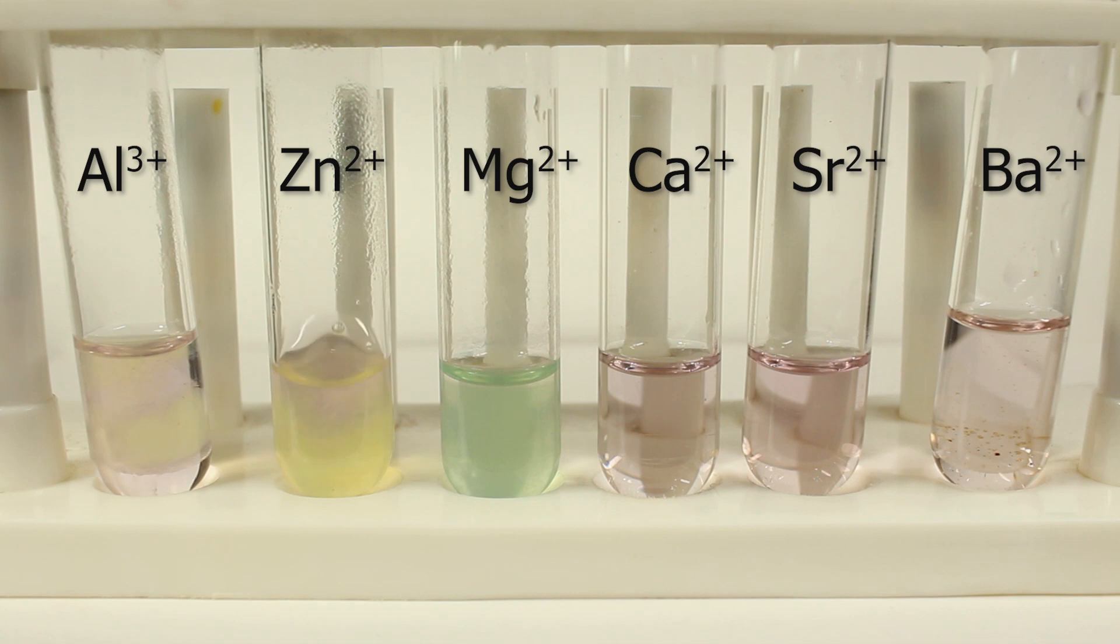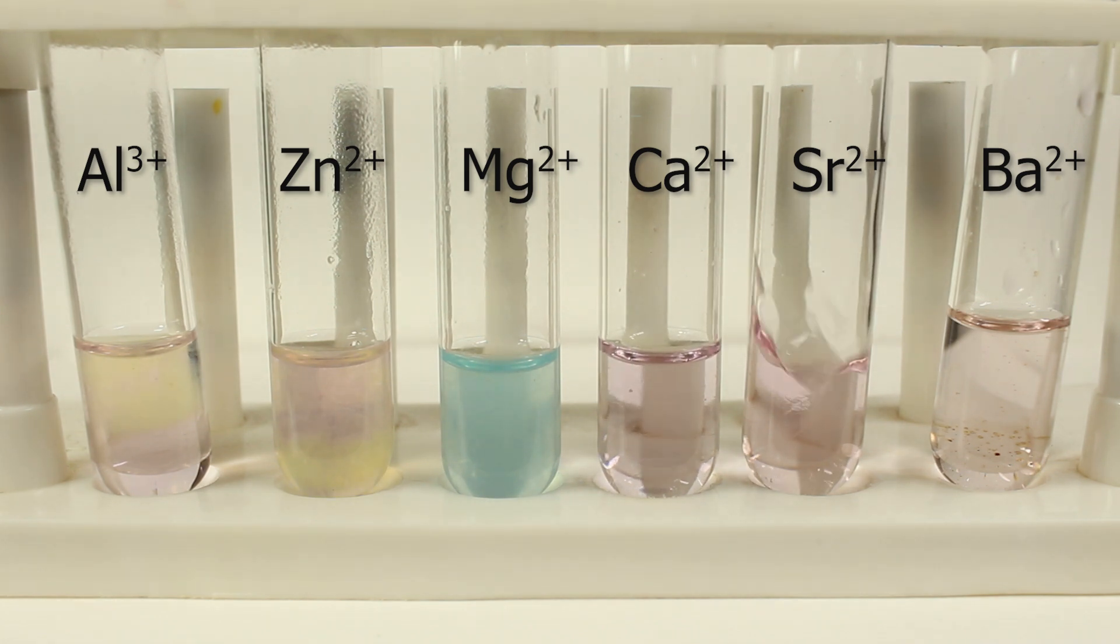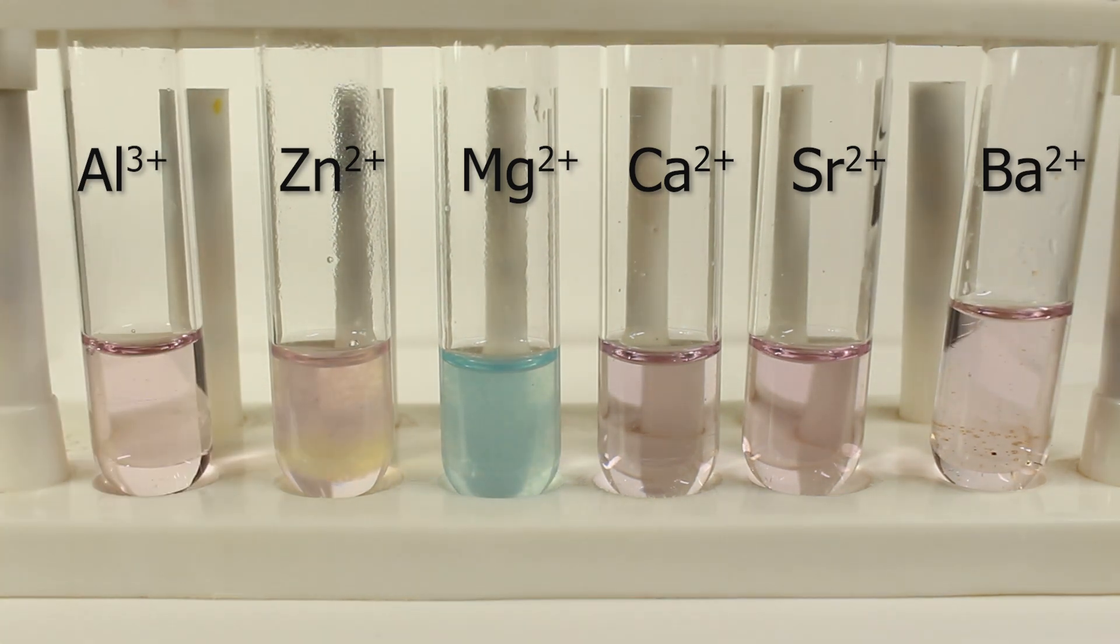You can see that it really returns violet back in aluminum and zinc case. No change is expected in calcium, strontium, barium. Magnesium which had a greenish tinge before now is clearly blue.